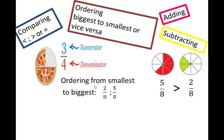If we have to order 5 eighths and 2 eighths from the smallest to the biggest, again we have to ensure that our denominators are the same. Both my denominators are 8. In this case we look at the numerators only: 2 and 5. 2 eighths is the smallest fraction, and because 5 is a bigger number, 5 eighths will be your biggest fraction. So 2 eighths will be written first and 5 eighths last.